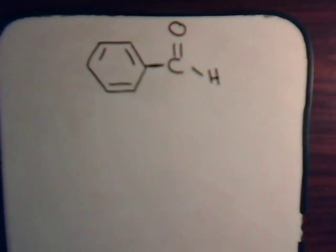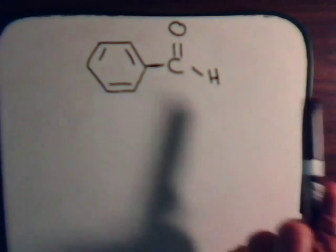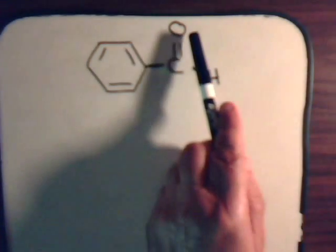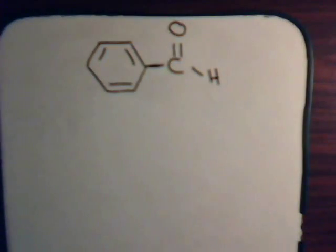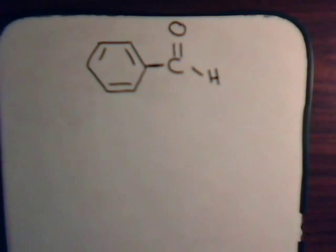Now here with the benzaldehyde, you see that a carbonyl group is attached to the benzene ring. The oxygen and the carbon are both sp2 hybridized, as we've gone over in our previous videos.